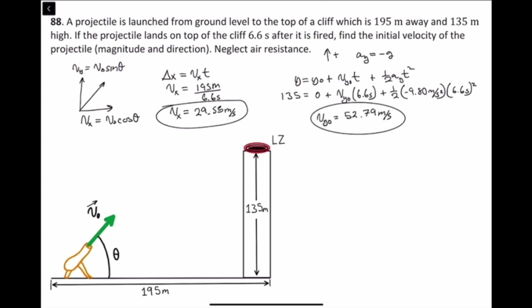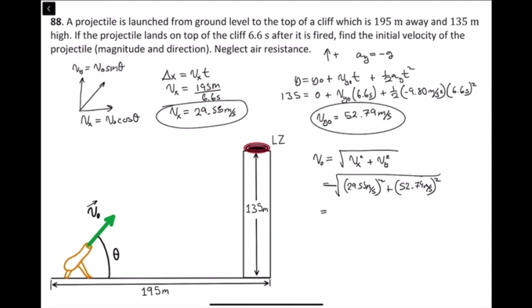Now to find the magnitude of the initial velocity, we take the square root of the sum of the squares of the x and y components: the square root of (29.55)² plus (52.79)². The initial velocity magnitude equals 60 meters per second.